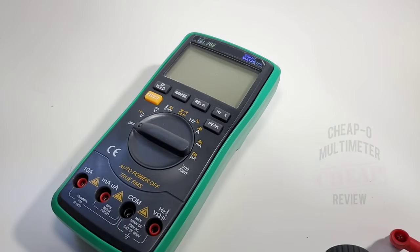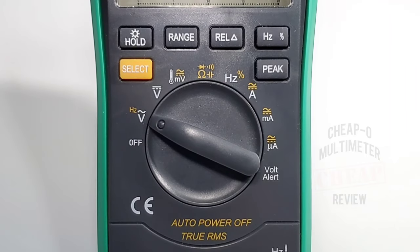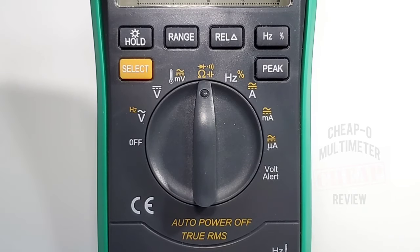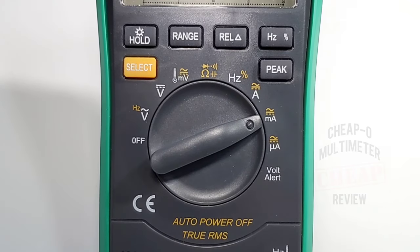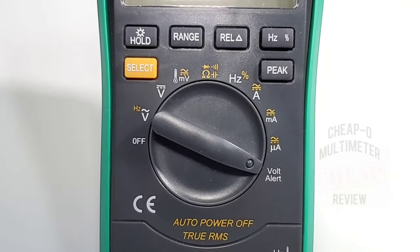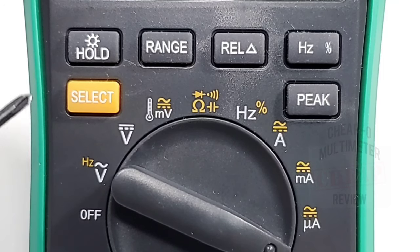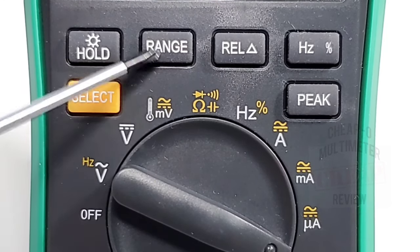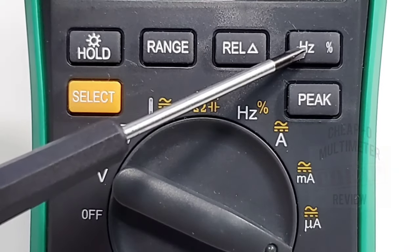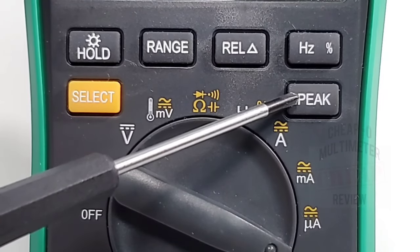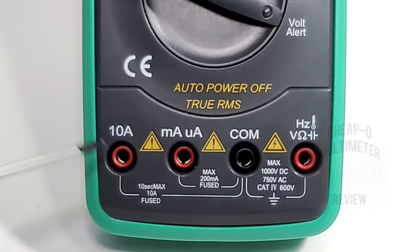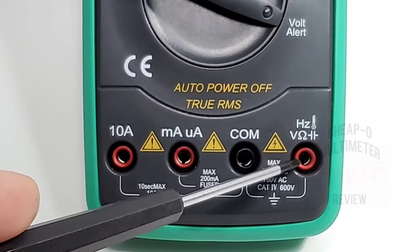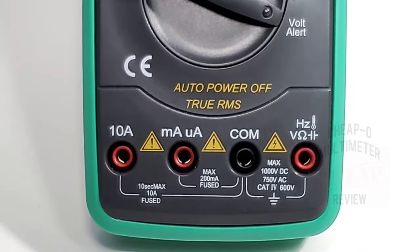Has those nice input holders on the back so if you want to store your jacks, easy breezy. Starting off at the 9 o'clock position: off, volts AC and frequency, volts DC, millivolts AC DC and temperature, resistance, capacitance, diode and continuity, frequency and duty cycle, high current amps AC DC, milliamps AC DC, microamps AC DC, and finally non-contact voltage detection or volt alert. Starting on the left, we have our select switch to switch between ranges, our hold button which doubles as the backlight, our range selection, our rail mode, frequency and duty cycle select, and finally a peak feature.